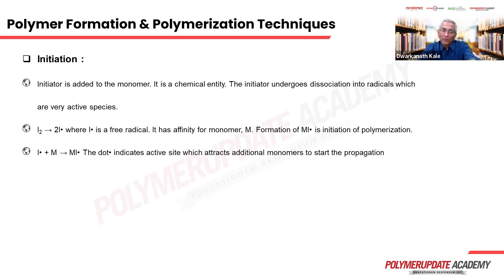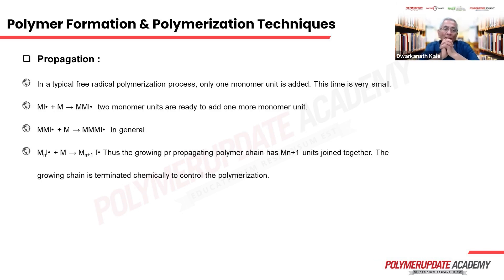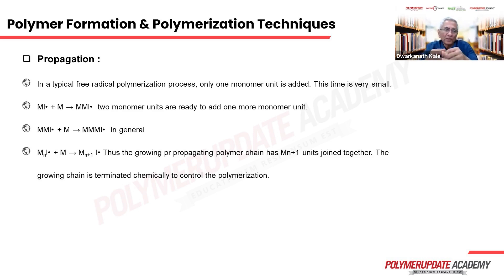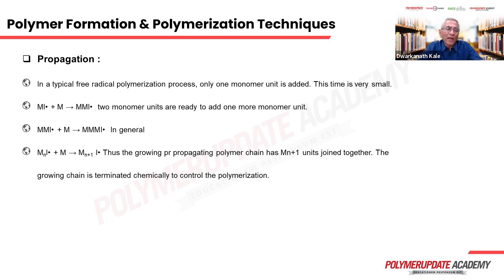That free radical will accept one more monomer, and likewise the monomer chain will grow. As we can see, MI· + M forms M-M·, meaning two monomers are joined. One more will be added to make three, then four, five, and so on — each time only one monomer is added. This entire process of adding 80,000 or 90,000 monomers happens in just a few seconds, so it is a very rapid process. The step i₂ becoming 2I· is initiation, and I· + M is also part of initiation.